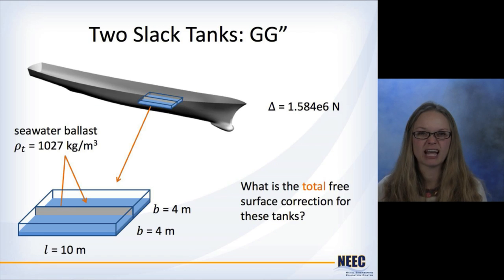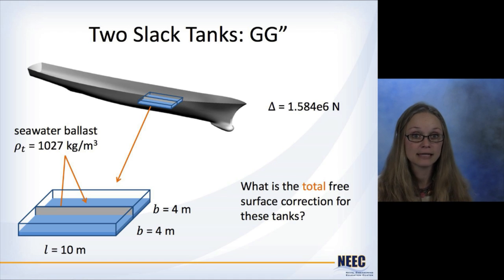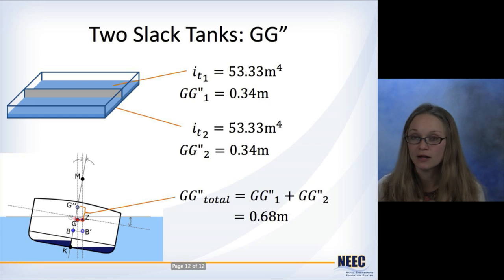We're going to do similar to what we had. I'm using the same tanks, but they're going to be oriented in the narrow fashion. So the length is 10 meters, the beam of each of them is 4 meters. Weight of the ship is the same. Still using seawater ballast. But now we want to know what is the total free surface correction for these tanks.